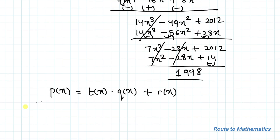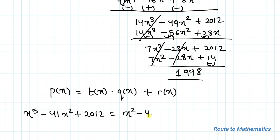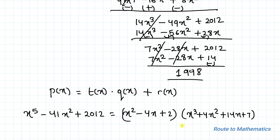So p(x) = x⁵ - 41x² + 2012, and t(x) = x² - 4x + 2. The quotient is x³ + 4x² + 14x + 7, and the remainder r(x) = 1998.